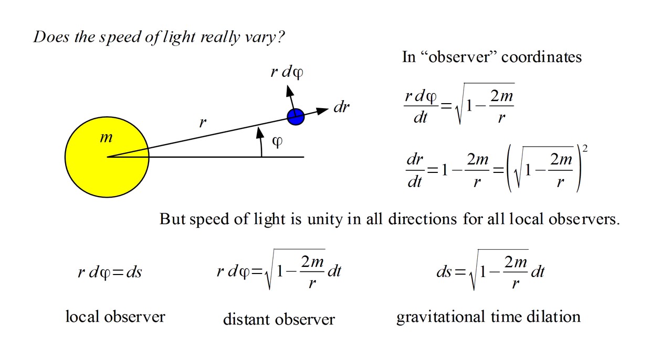Therefore, the apparent variation of the speed of light in the longitude direction is simply a manifestation of gravitational time dilation. Light appears to move slower because time appears to move slower.